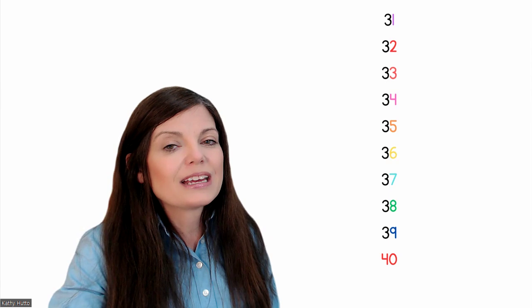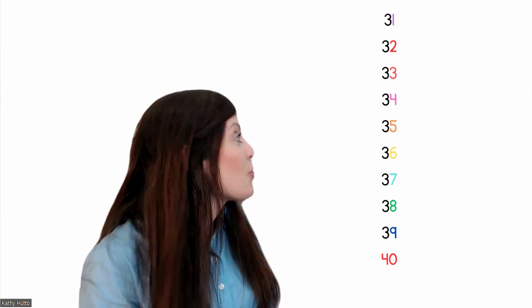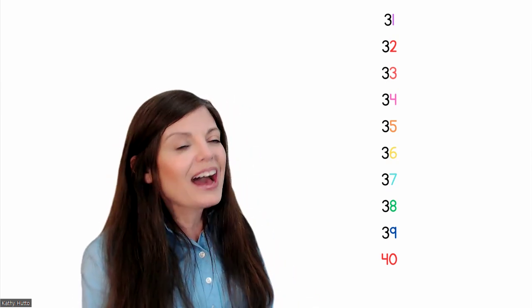So we're going to do the same thing, but this time we're going to put 30 in the front. All right, so take a look. Now we have a 3 in the front, so we're going to say 30. These are the 30s. But otherwise, we just start over. 1, 2, 3, 4, 5. You ready? 31, 32, 33, 34, 35, 36, 37, 38, 39. And there's another teen. What comes after the 30s?